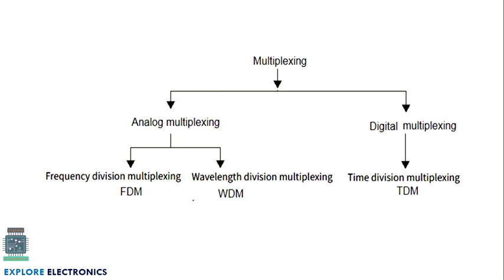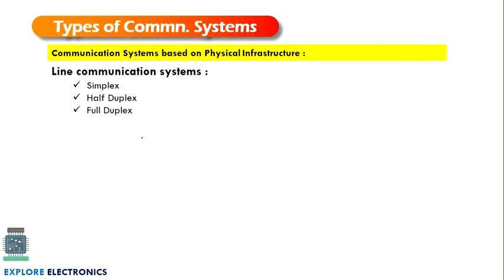The different types of multiplexing are FDM, TDM, and also WDM — Wavelength Division Multiplexing. Now let us see the different types of communication systems. As seen in the previous video, there are two types: analog communication and digital communication, and also baseband communication and carrier communication. Communication systems can also be categorized based on the physical interface — how we connect two devices.